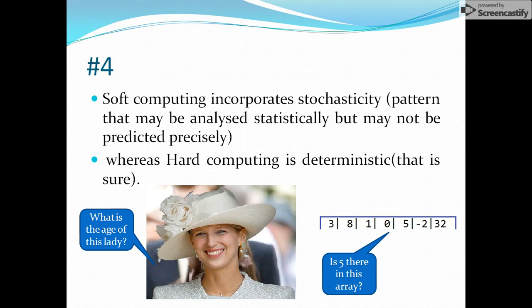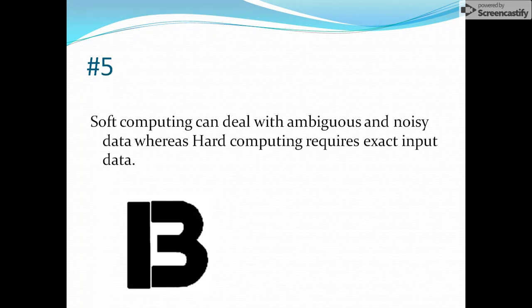So if someone asks you what is the age of this lady, you cannot predict precisely that this lady is specifically of 30 years or 31 or 32 or 25 years. You can analyze it statistically by seeing the color of hair, by seeing the skin texture and so on, but you cannot predict precisely the age of that person. That is what soft computing uses. Whereas if you are talking about hard computing, it is deterministic - that is, it's sure. Say in this array, if someone asks you if 5 is available in this array or not - yes, it is deterministic. Either it will be there or it will not be there.